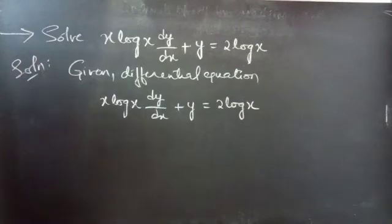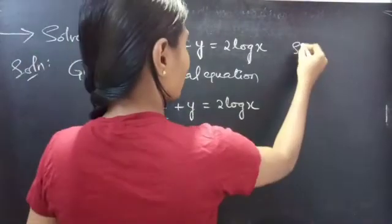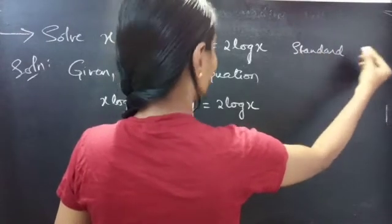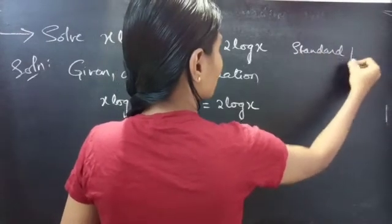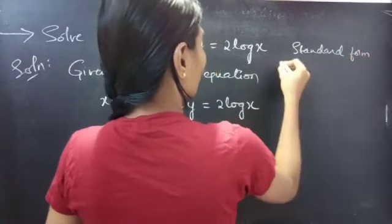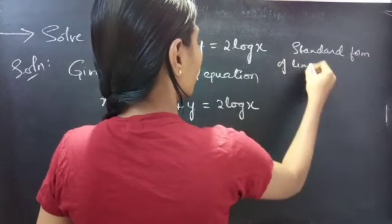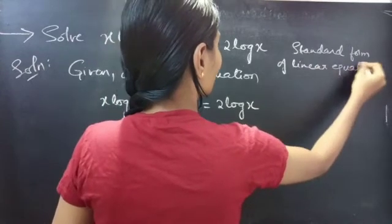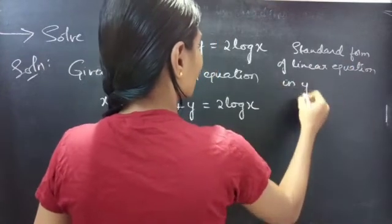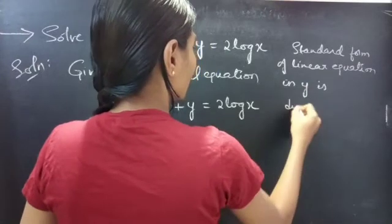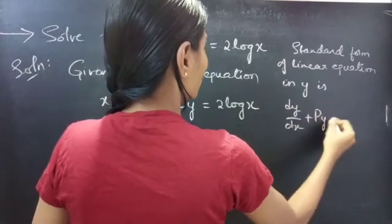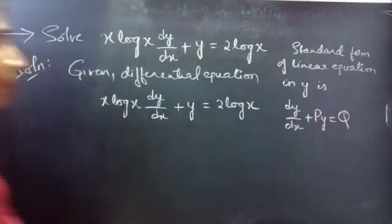Now compare the given equation with the standard form of linear equation in y. We know that the standard form of linear equation in y is dy/dx + p·y = q.